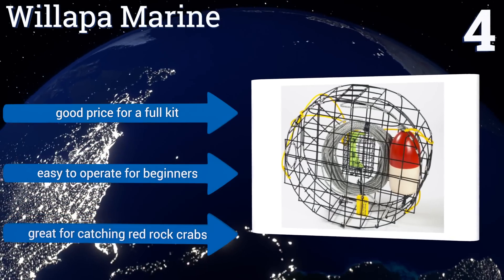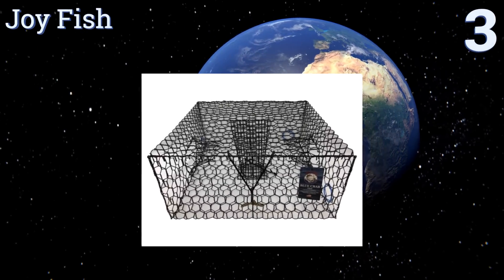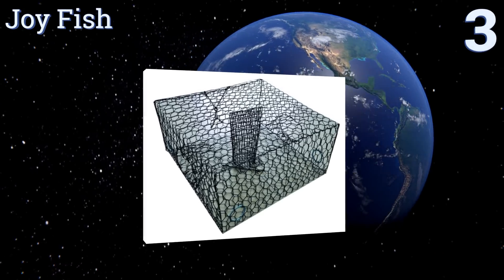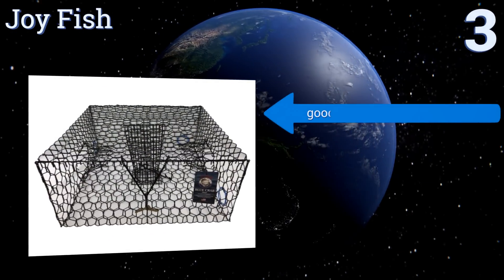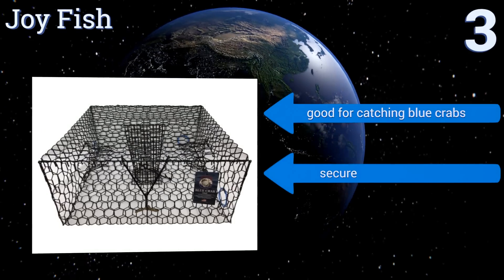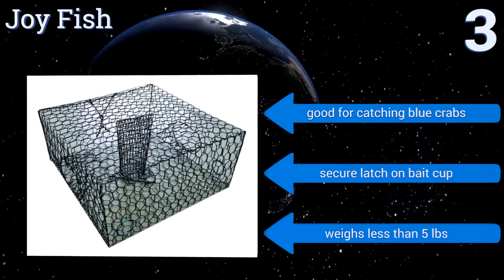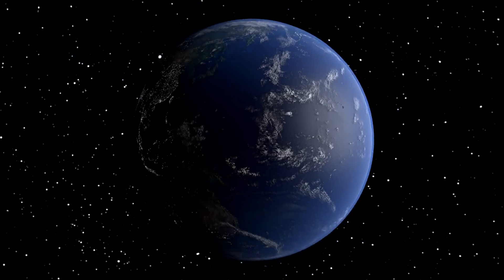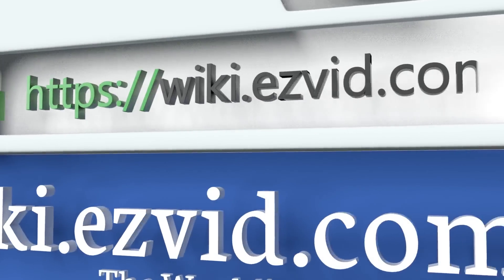It's great for catching red rock crabs. Nearing the top of our list, number three, the Joy Fish is a bit on the smaller side, but that just makes it easier to haul and handle. It still has enough room to pull in at least 10 keepers a day. The 16 gauge wire is also sturdy enough to take any abuse you or the salt water can dish out. It's good for catching blue crabs and includes a secure latch on the bait cup. It weighs less than five pounds.